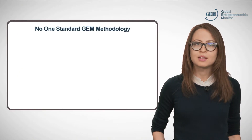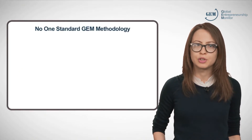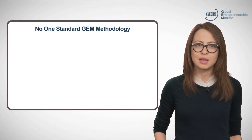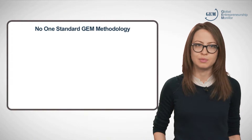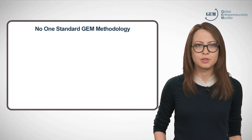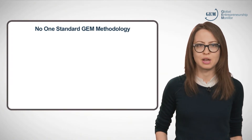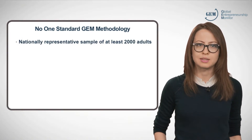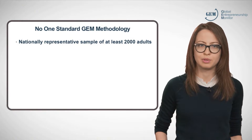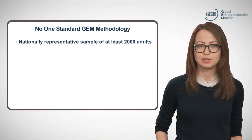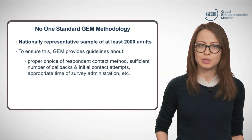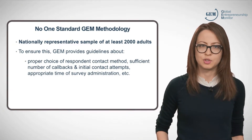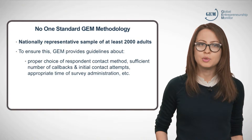Although GEM provides a lot of information about what makes for a good survey design and prides itself on the consistent quality of sampling methodology from team to team, you may be surprised to learn that there is no one standard GEM methodology. The only firm requirement is that each team collects a nationally representative sample of at least 2,000 adults. To help the team do so, GEM provides guidelines to ensure that various aspects of the survey design are not introducing any bias.